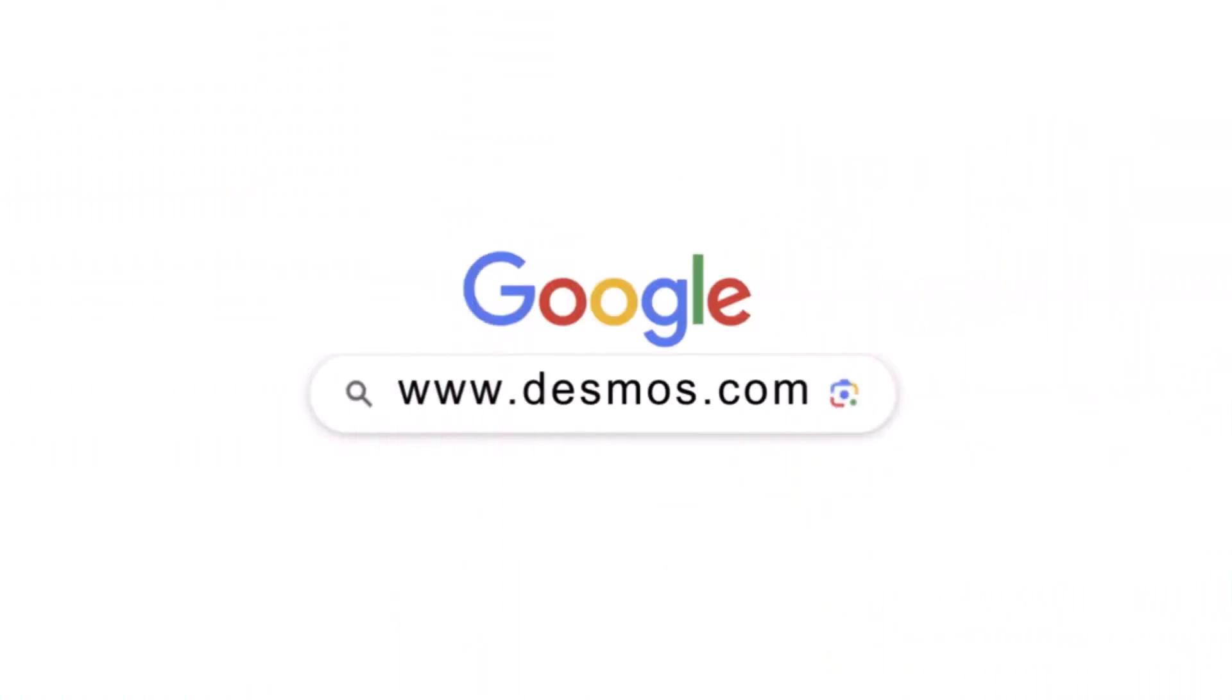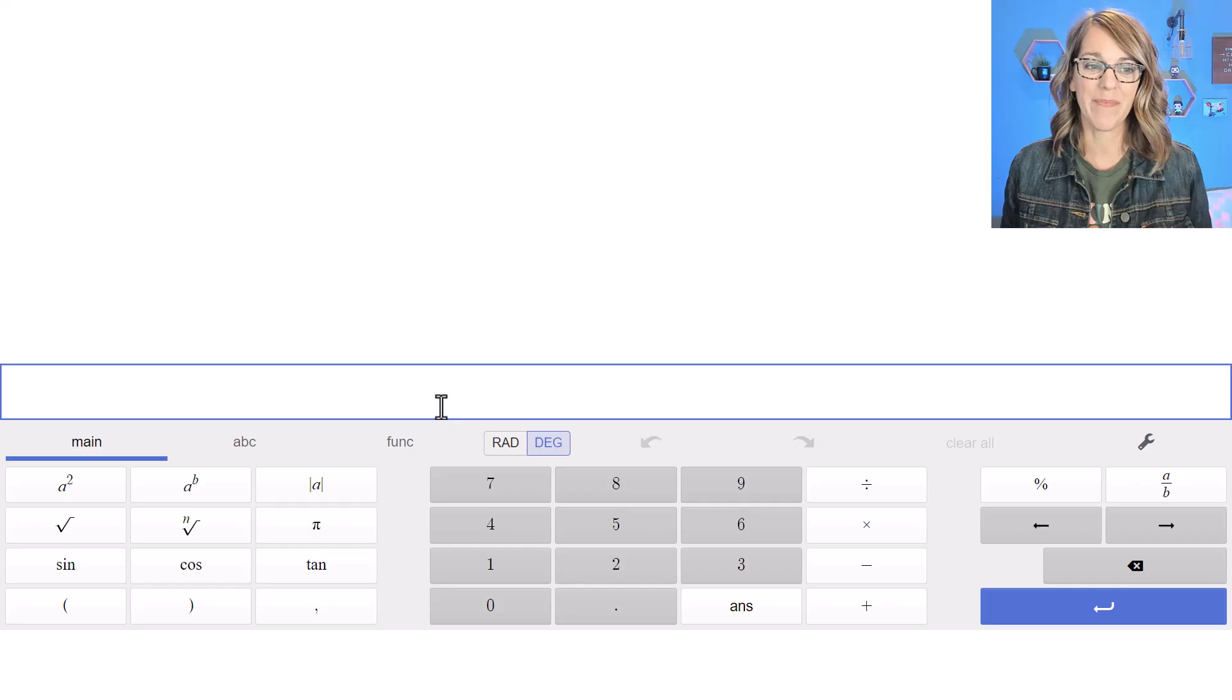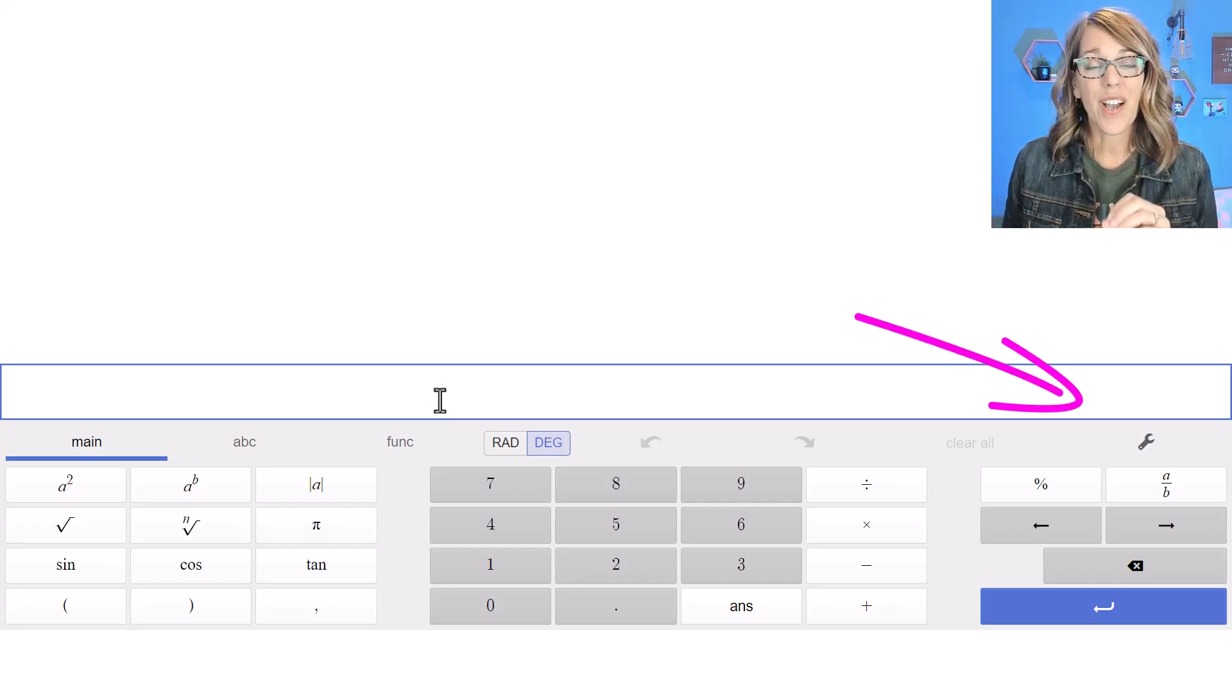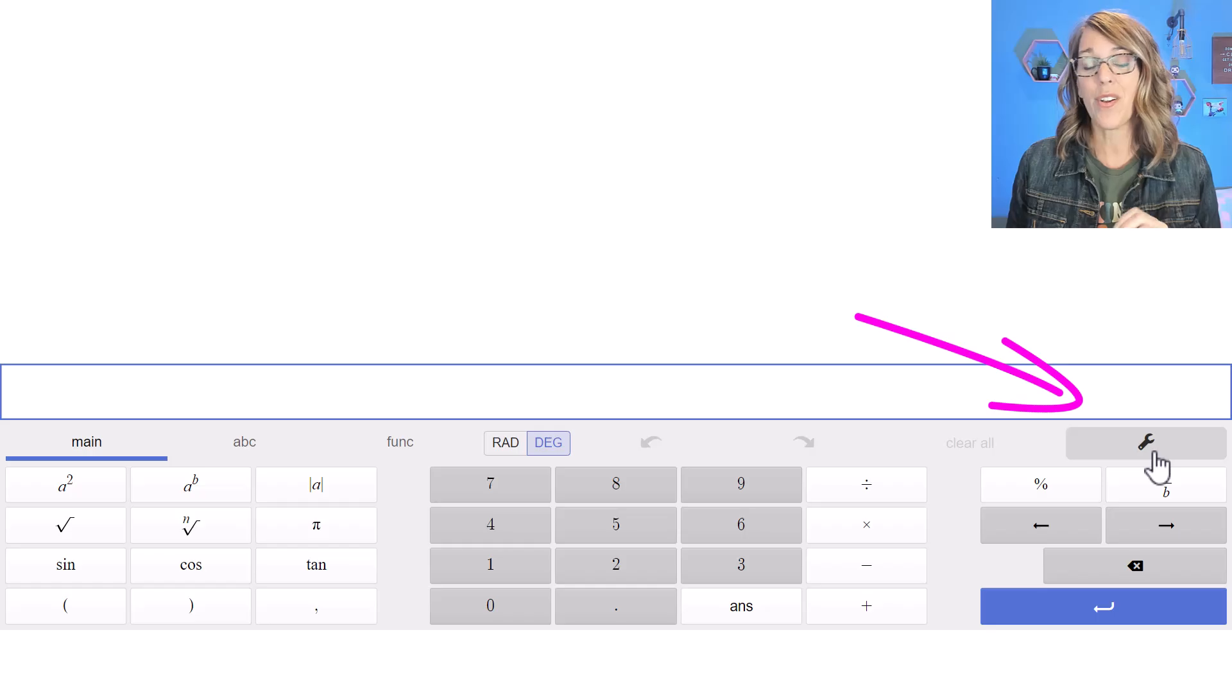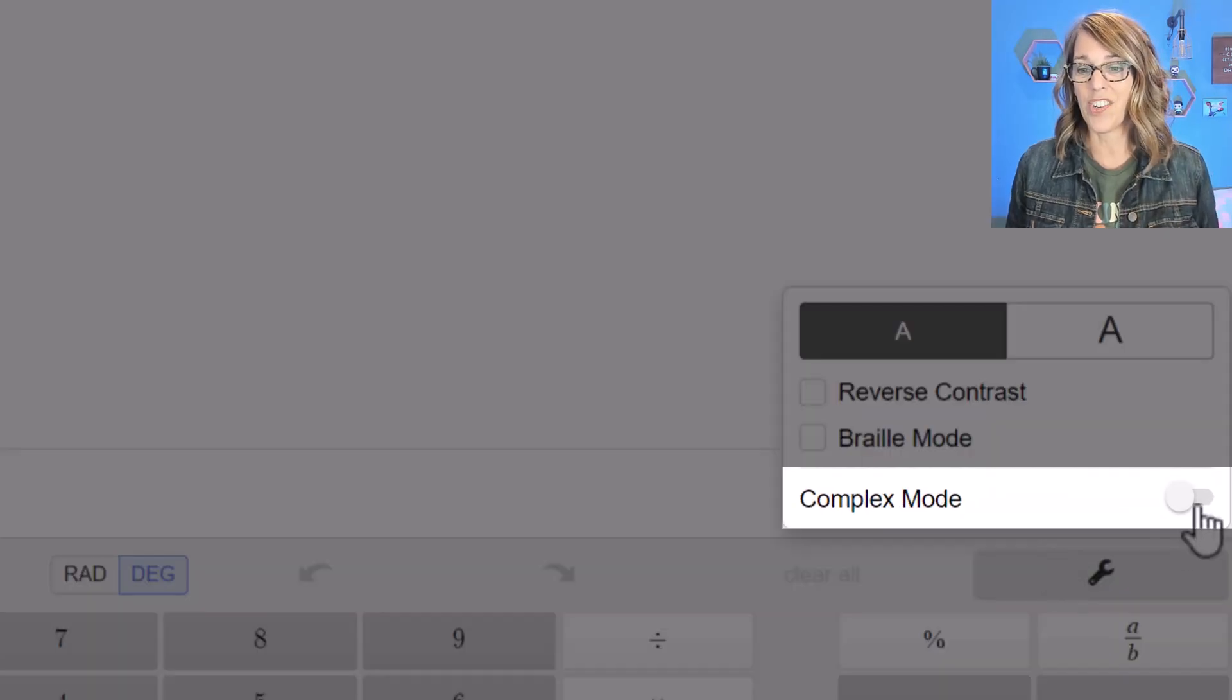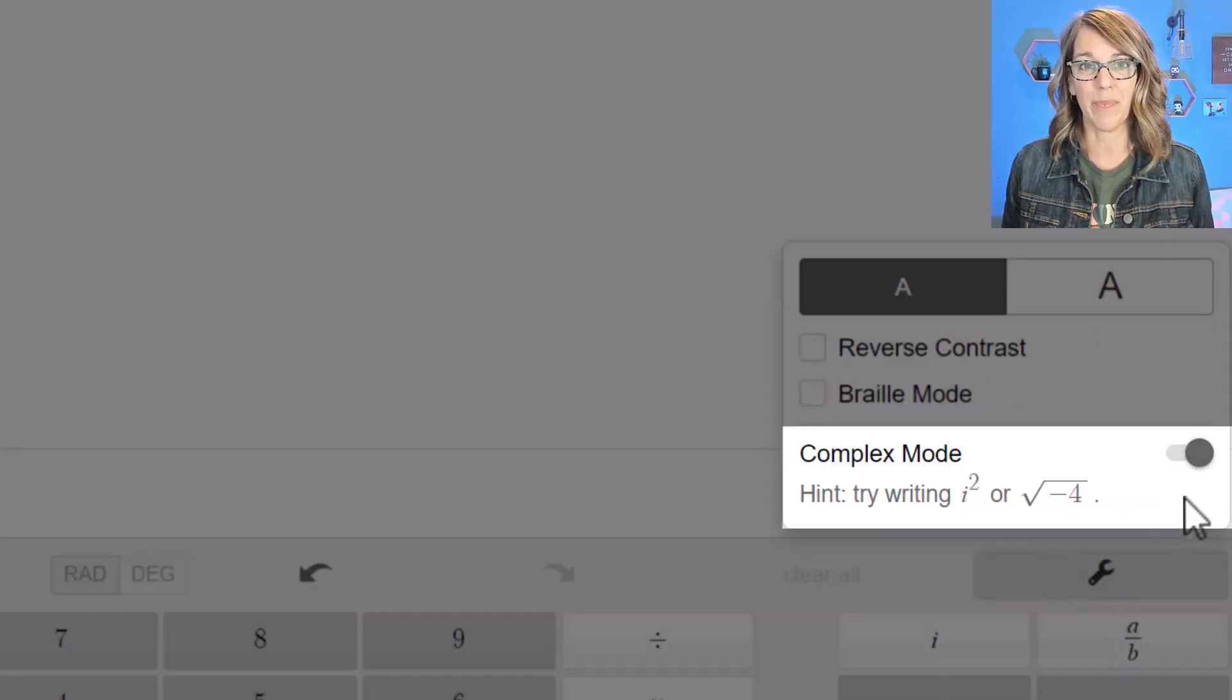Let's go through all the things that Desmos can do with complex numbers, and of course it does a lot. I'm going to start at Desmos.com in the scientific calculator. The very first thing that we need to do is turn complex mode on. I'm going to go to the settings with this wrench and then toggle over to complex mode on.